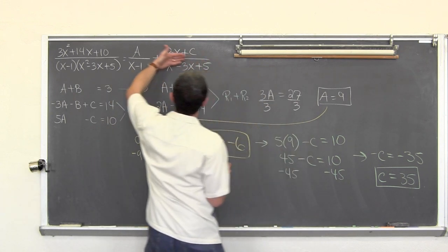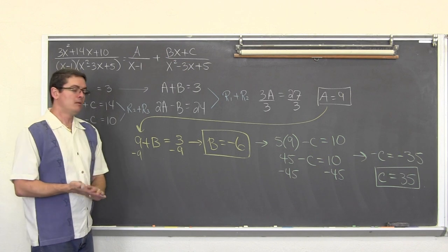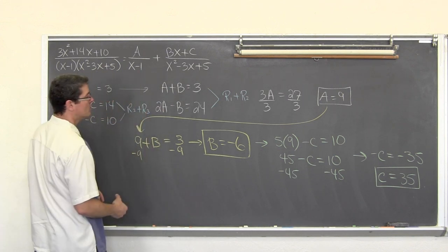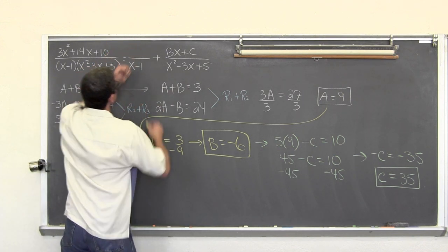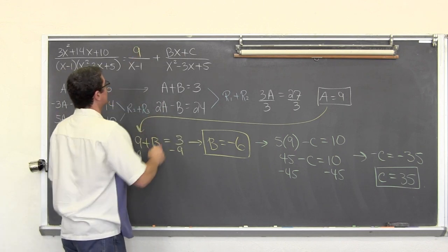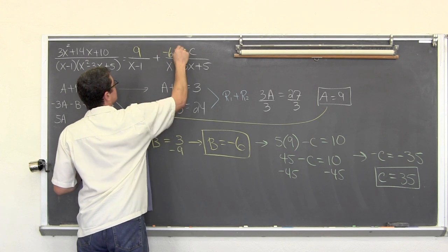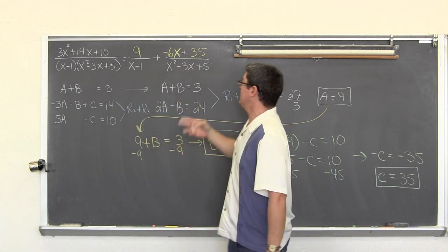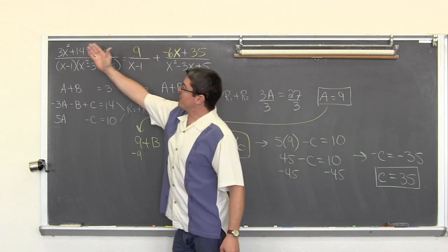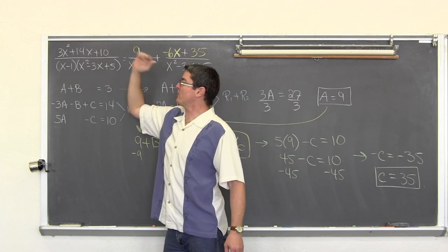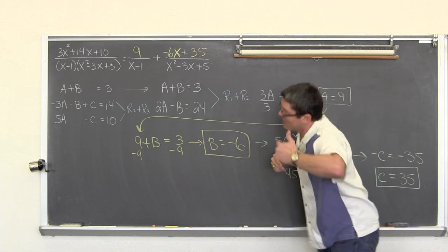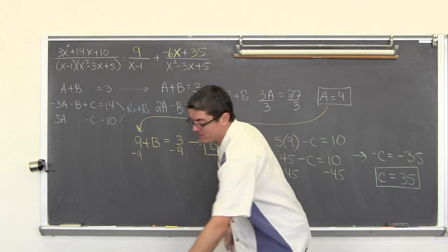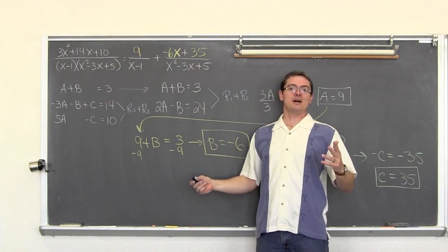Now we take our constants — a equals nine, b equals negative six, c equals thirty-five — and plug them back into the partial fraction decomposition. We can also verify by adding the two resulting fractions back together to confirm we get the original expression. BAM! Moving on to the last case.